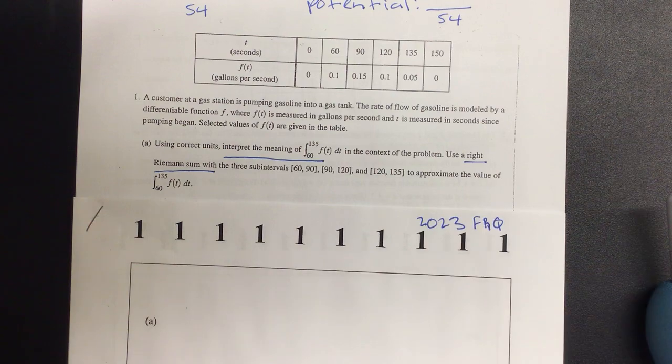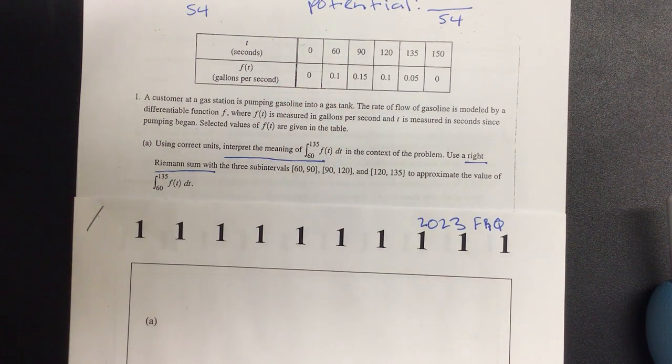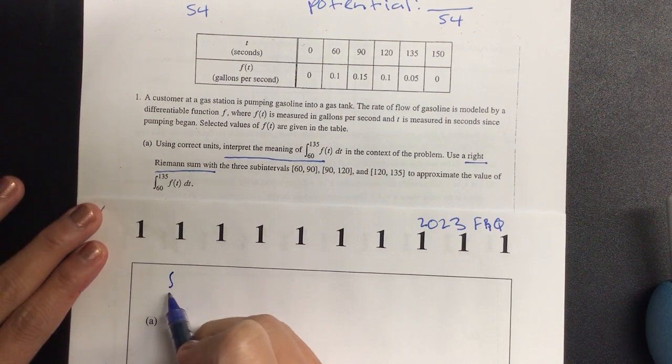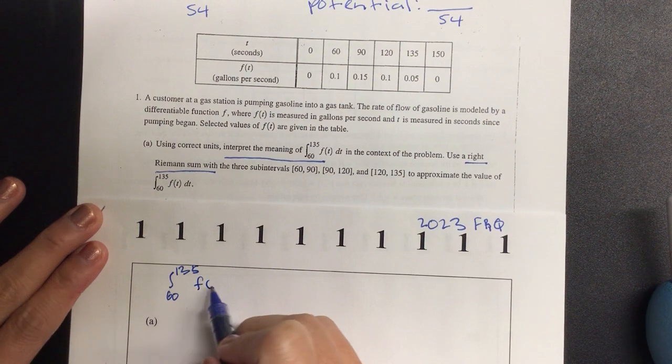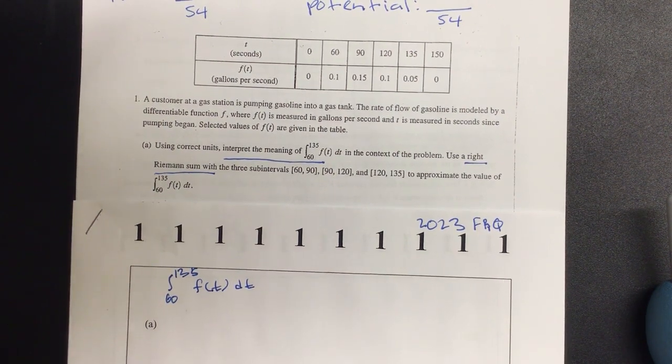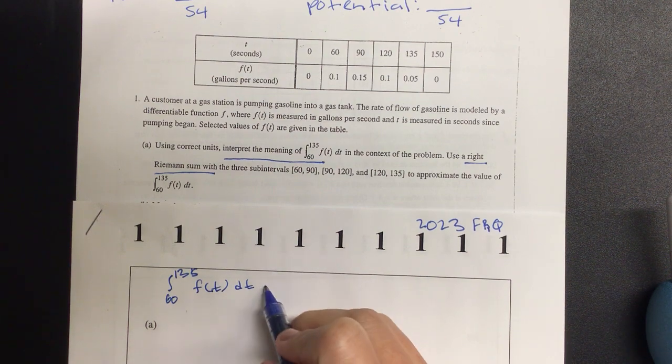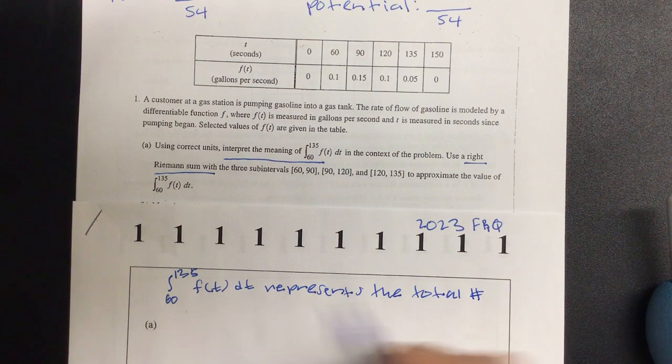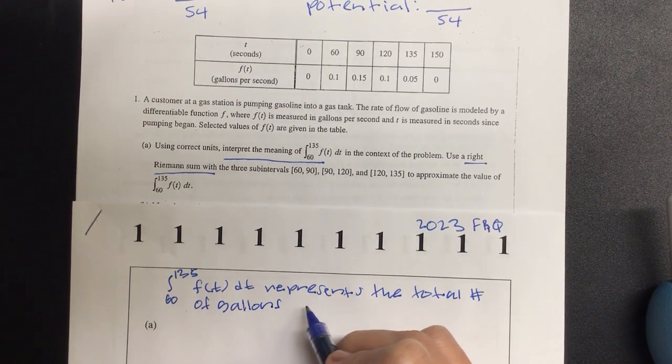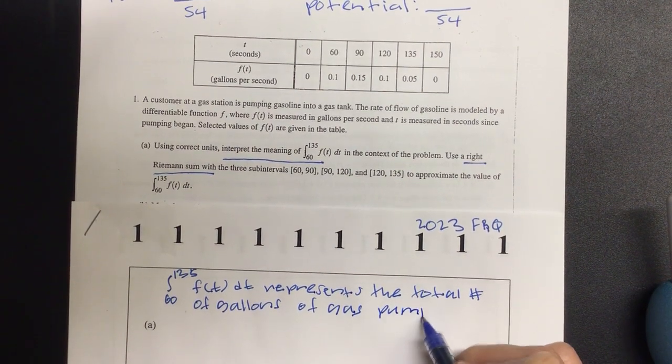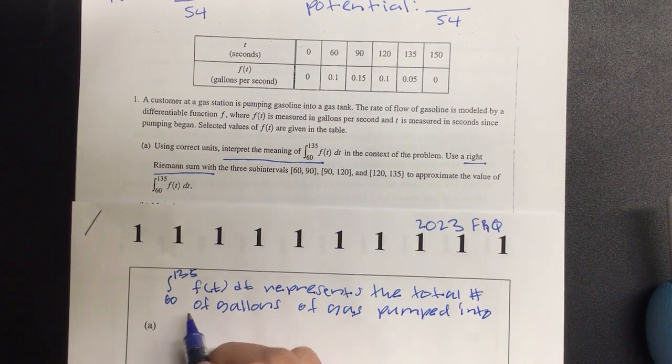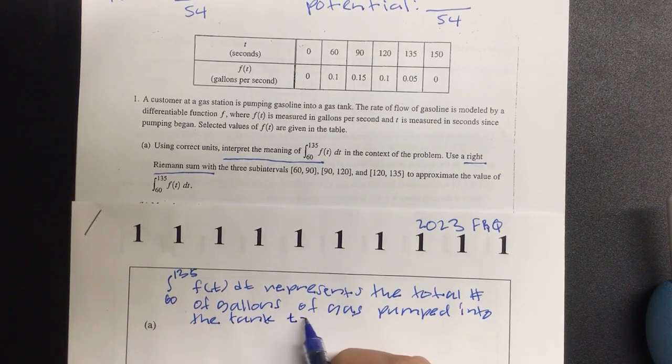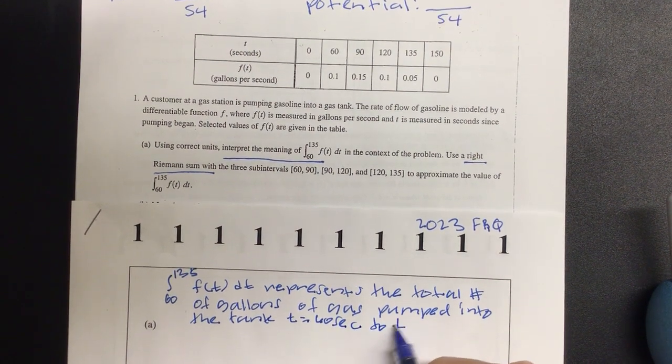Okay, so if that is a rate, does it make sense that you start at the rate of zero before you start pumping, the gas is not going in, and at the end, hopefully the gas is done, it's not going in. So it says to describe the meaning of, so let's put on here, integral from 60 to 135 F of T DT is representing the amount of gas going in where? Into the tank. So it represents the total amount, total number of gallons, and always use the units, they're looking for that, of gas pumped into the tank.